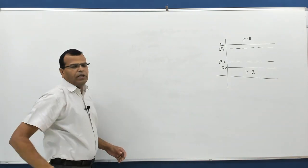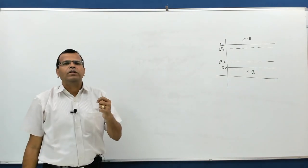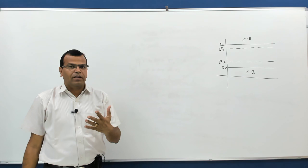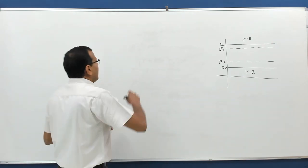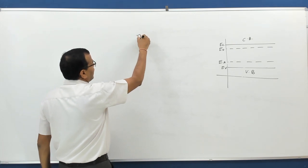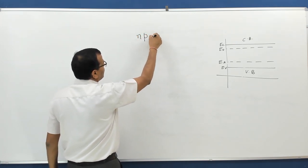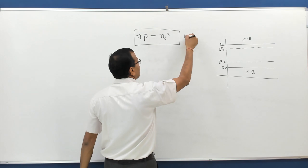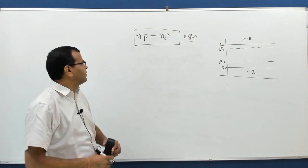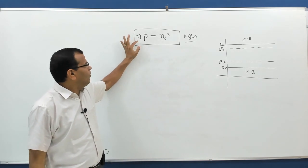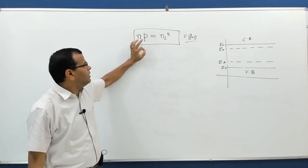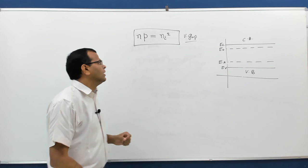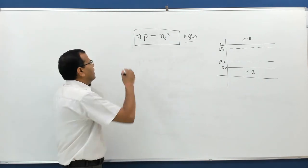According to the law of mass action, the product of electron concentration and hole concentration in extrinsic semiconductors is always a fixed constant. The equation is: n × p = ni², where n is the concentration of electrons in the conduction band and p is the concentration of holes in the valence band. This is a very important equation.